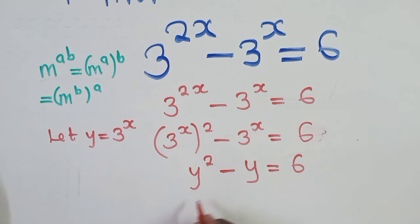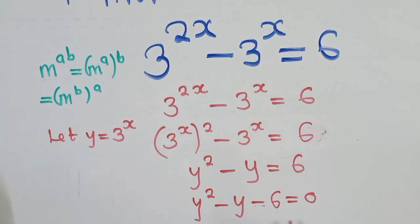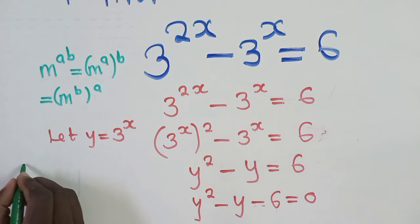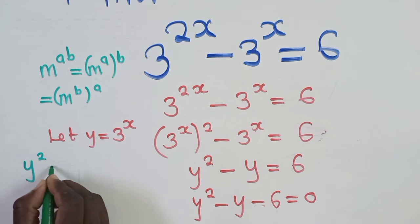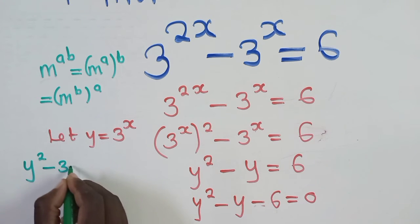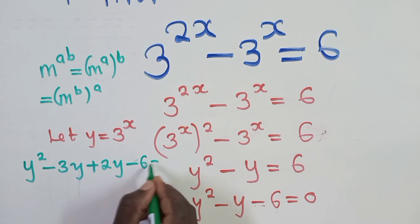We can put it in standard form: y squared minus y minus 6 equals zero. Now this quadratic equation is in standard form. To solve it, we find two numbers such that when we multiply them they give negative 6, and when we add them they give negative 1. Those numbers are negative 3 and positive 2.